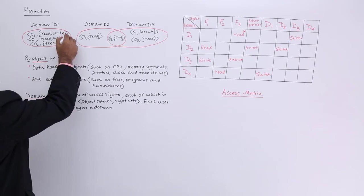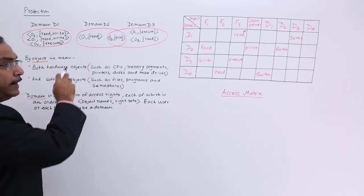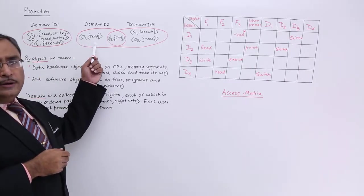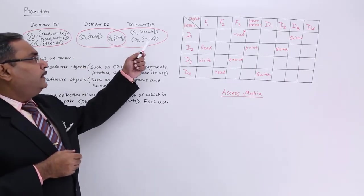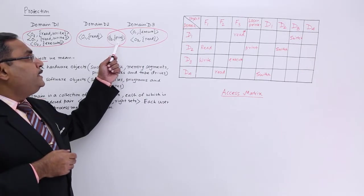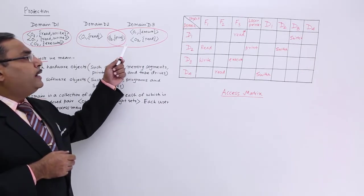So, this is known as the domain, this is known as the domain and in this particular case also, we are having this object one where read operation can be performed and these are the things are there. This is object to print is common between D2 and D3.